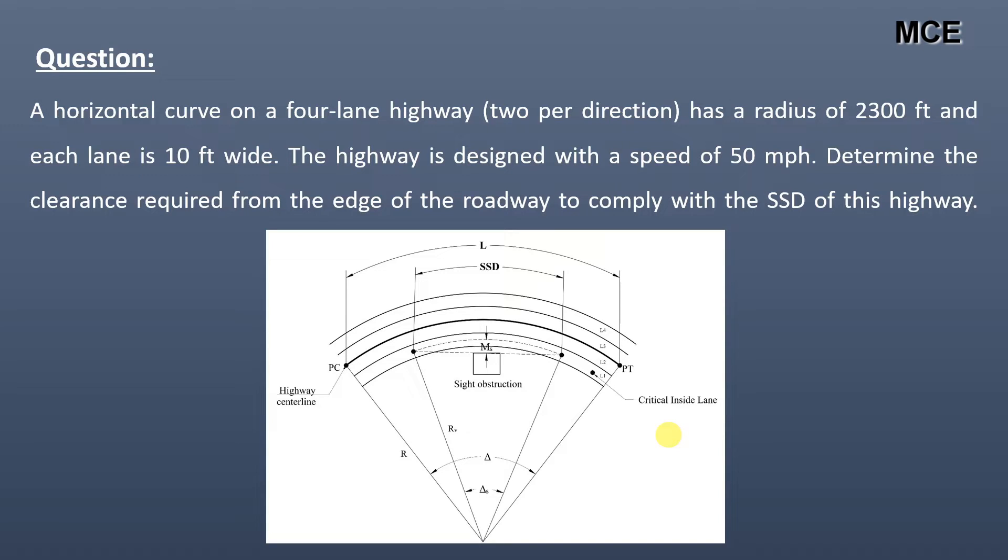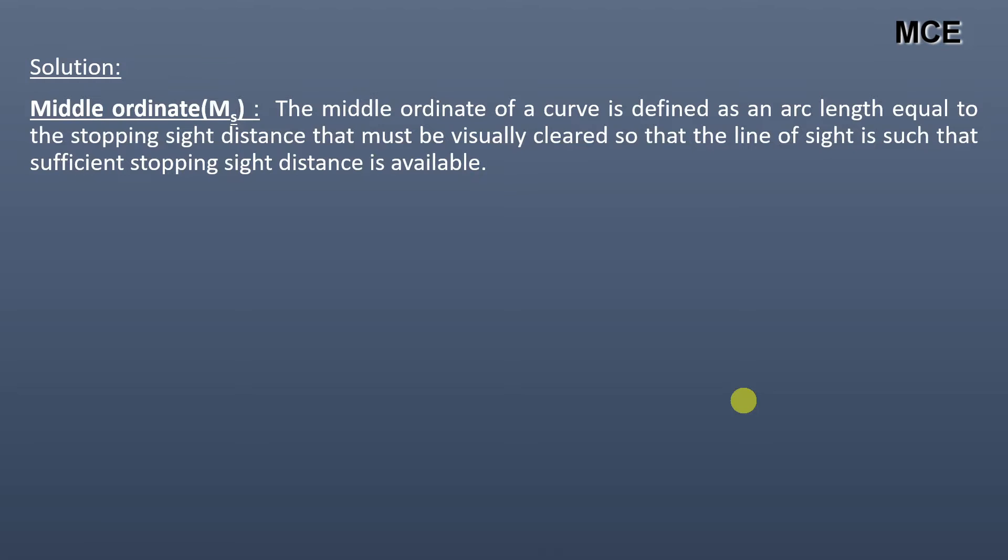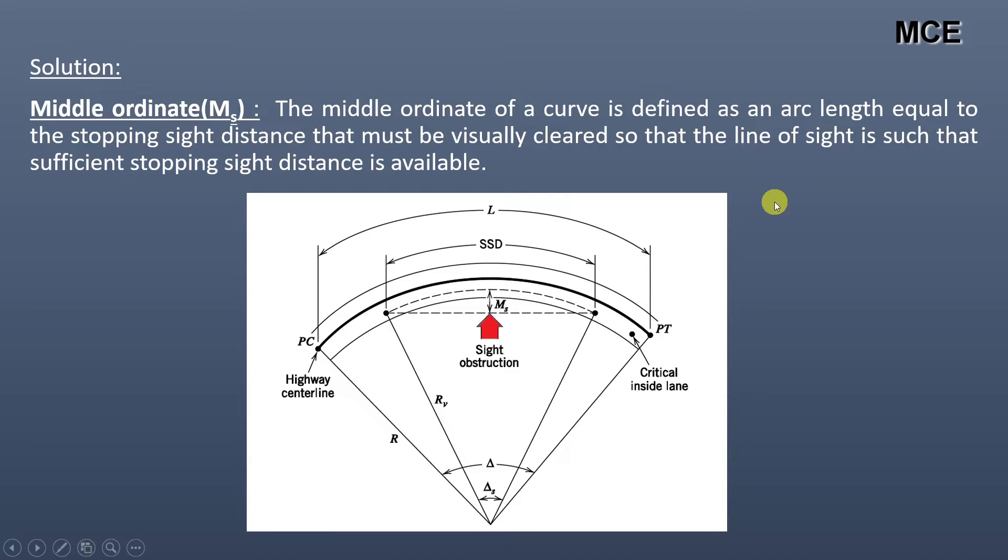The figure of this question is given below. First, we will see what middle ordinate is. Middle ordinate of a curve is defined as an arc length equal to the stopping sight distance that must be visually cleared so that sufficient stopping sight distance is available. From this figure, we can see that the middle ordinate is measured from the innermost lane of a horizontal curve to the side obstruction.